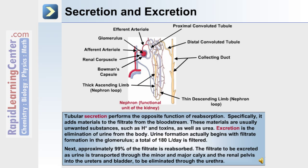Excretion is the elimination of urine from the body. Urine formation actually begins with filtrate formation in the glomerulus. A total of approximately 180 liters per day is filtered. Approximately 99% of that filtrate is reabsorbed. The filtrate to be excreted as urine is transported through the minor and major calyx and the renal pelvis into the ureters and bladder, to be eventually eliminated through the urethra.